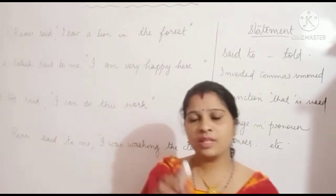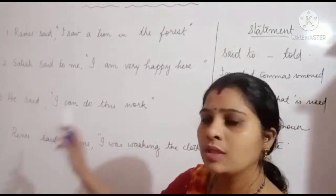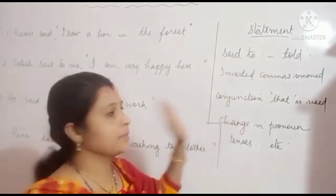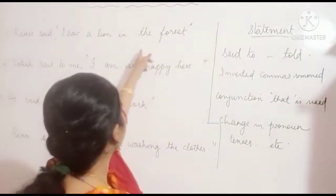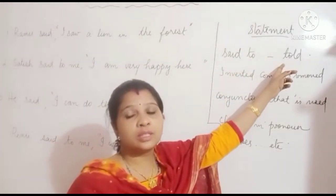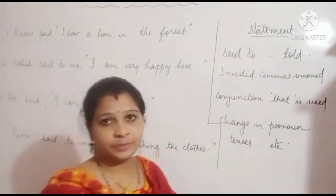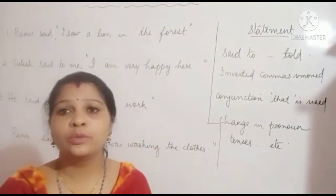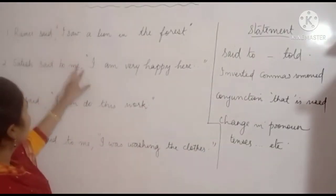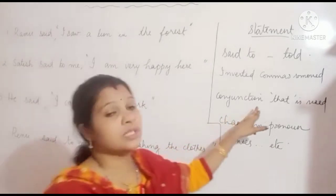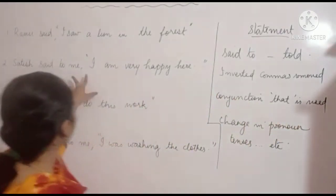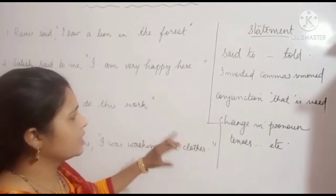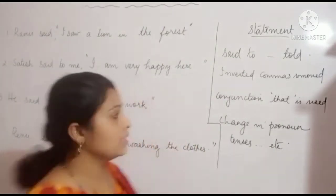Now let us move towards the examples. Before that, here are the rules to keep in mind for statements. First, if 'said to' is given in direct speech, we change it to 'told'. Second, inverted commas are removed. Third, to connect the sentences, the conjunction 'that' is used. So the comma and inverted commas are removed and conjunction 'that' is added. Then we apply the changes in pronoun and tenses.